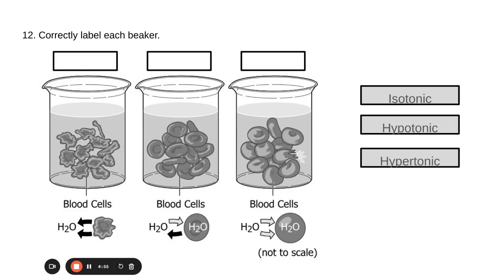And then the third thing to remember is hypo and hyper are opposites. So that then means that beaker A is the hypertonic solution because it's the opposite of what's going on in C.